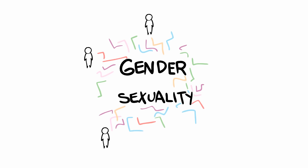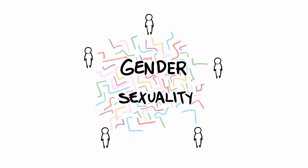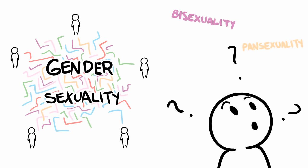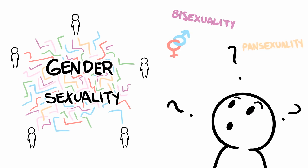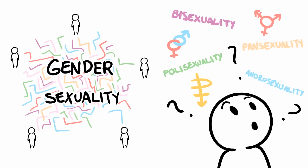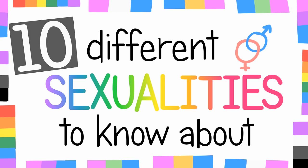Gender and sexuality are two concepts that are incredibly individualized, and so it shouldn't be surprising that they are so complex. It can be hard to navigate the world of sexuality due to the different terms and labels. This video aims to help you navigate this world by arming you with some definitions and examples of ten different sexualities, some of which you might not even know about.